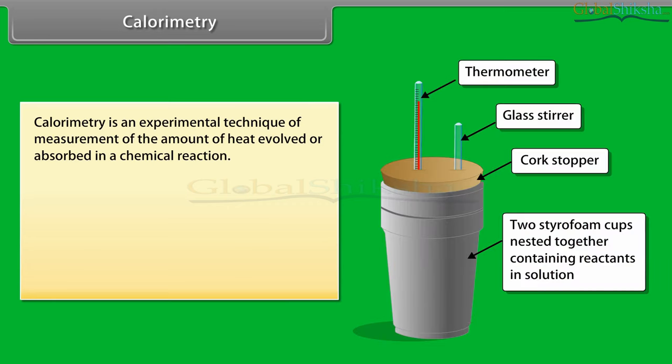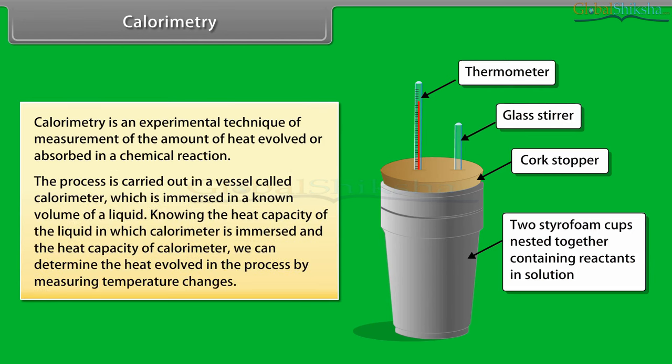Calorimetry is an experimental technique of measurement of the amount of heat evolved or absorbed in a chemical reaction. The process is carried out in a vessel called a calorimeter, which is immersed in a known volume of a liquid. Knowing the heat capacity of the liquid and the calorimeter, we can determine the heat evolved in the process by measuring temperature changes.